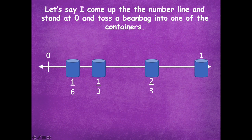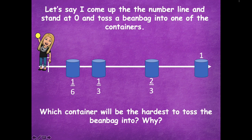I stand at zero and I'm going to toss a bean bag into one of the containers. Which container will be the hardest for me to toss the bean bag into, and why? Do you think one-sixth, one-third, two-thirds, or one? Probably one, right? Because it's the farthest distance from zero. I'll give it a try.